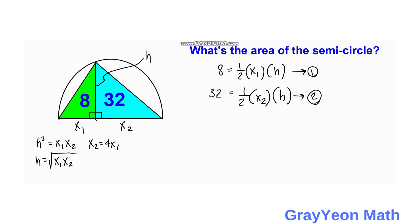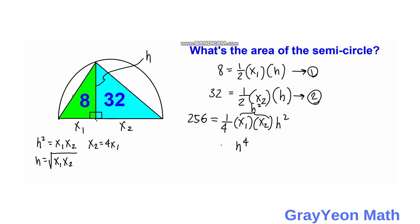Next, we multiply the two equations together. We get 8 times 32 equals 256, and one half times one half is one fourth, times x1 times x2 times h squared. Since x1 times x2 equals h squared, we get one fourth times h to the fourth equals 256. Cross-multiplying gives h to the fourth equals 1024.